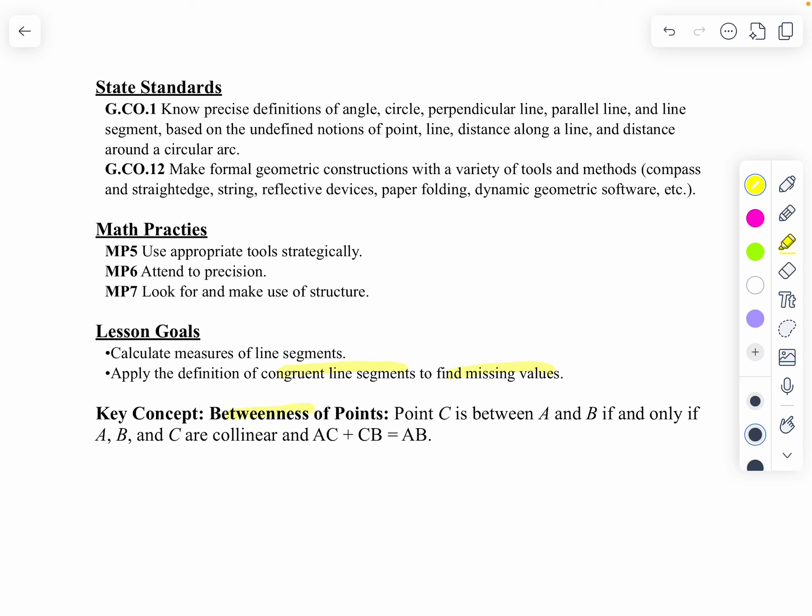Now, betweenness of points, sometimes you'll see this referred to as the segment addition postulate. Remember, a postulate is something we accept without proof. And what it says, as long as you have three points that are collinear, that's the big if. They've got to be collinear, they've got to be in the same line. And we're going to say like C is between A and B. What we're going to say then is AC plus CB equals AB. The sum is equal to the parts. That's really what we're saying.